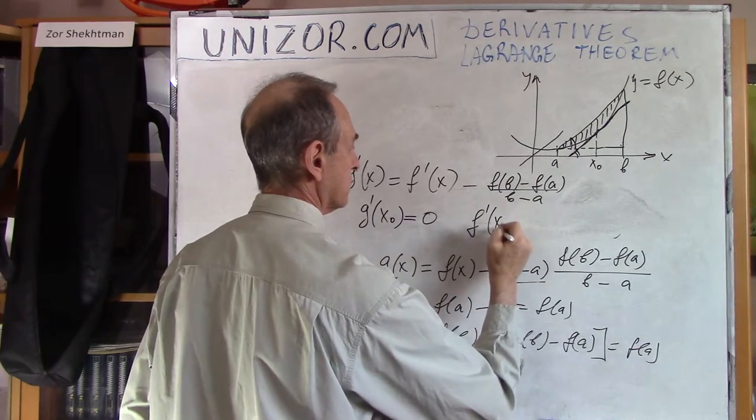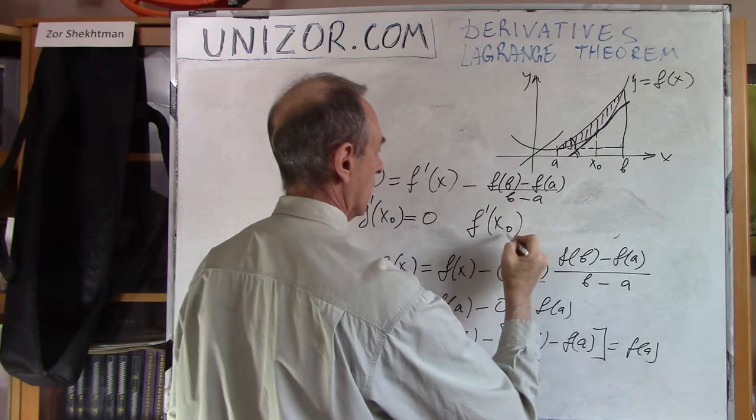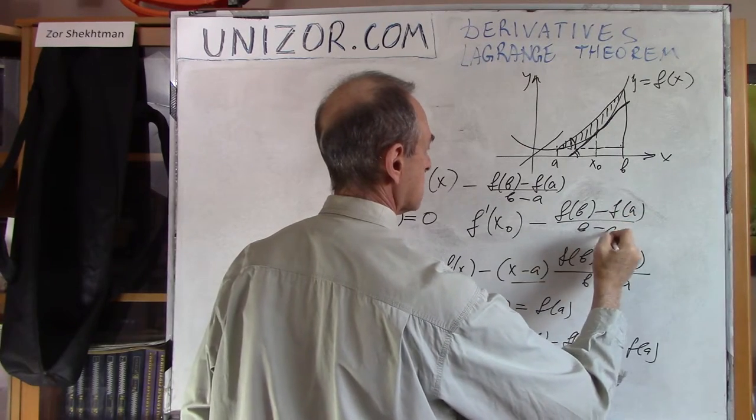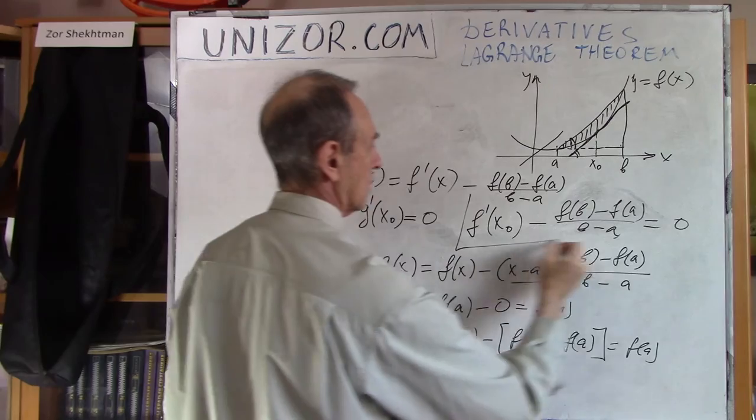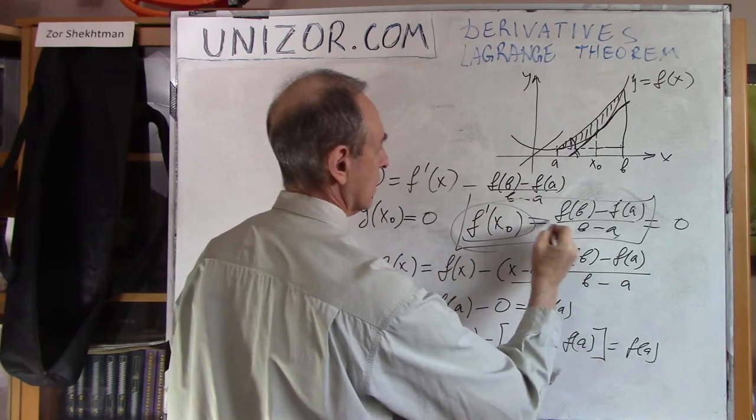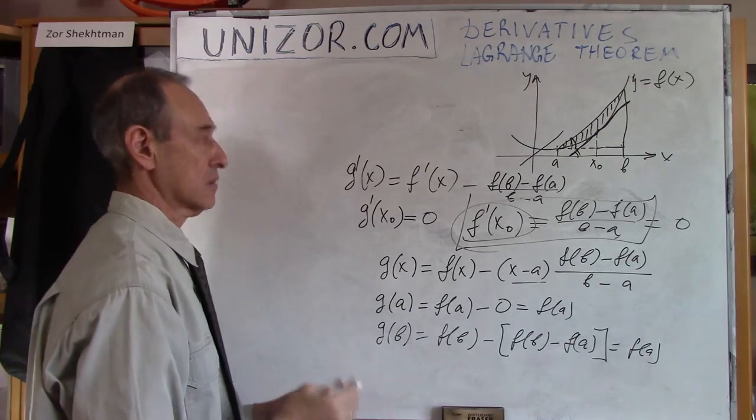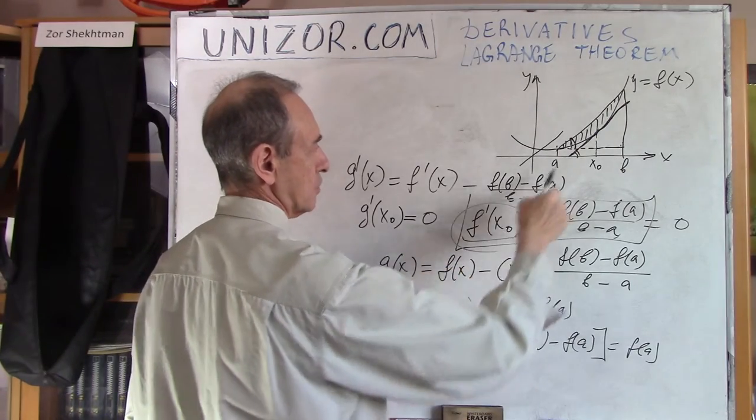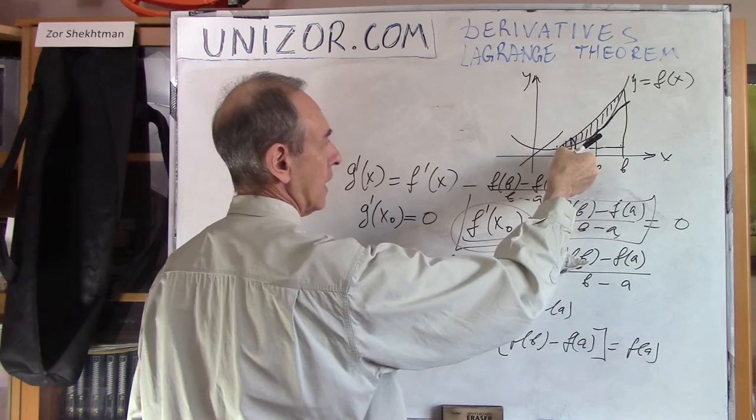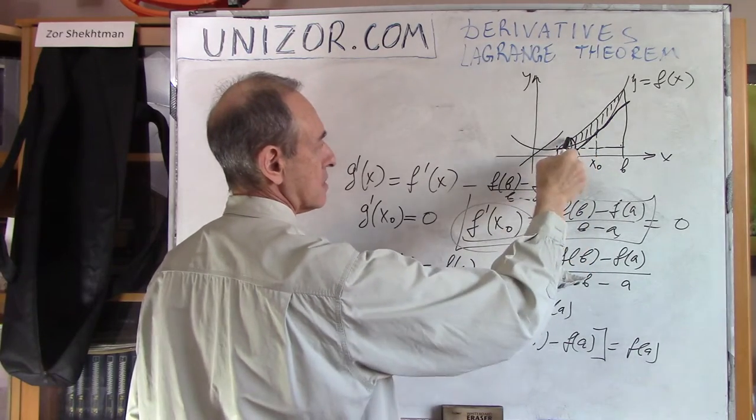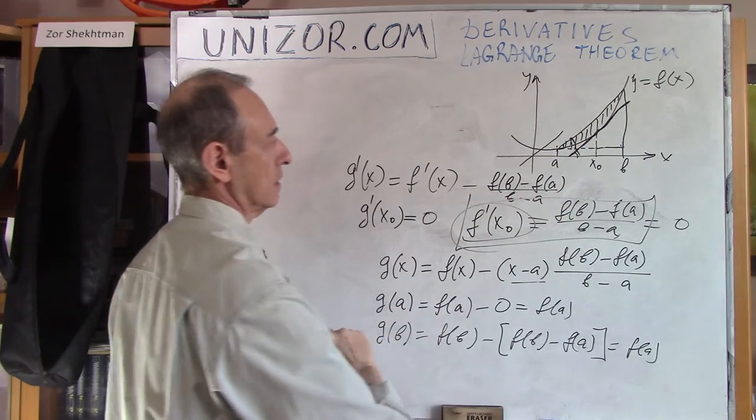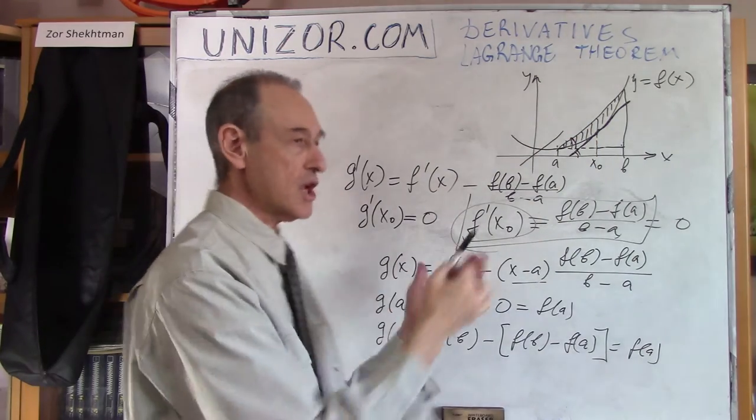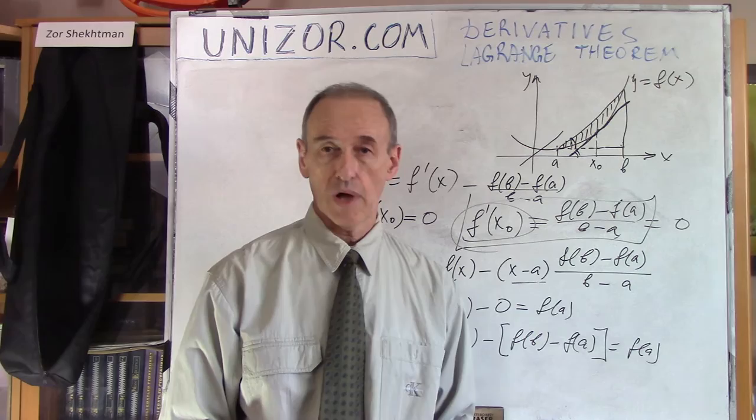That means that F derivative at x0 minus FB minus FA divided by B minus A is equal to 0. So, which means that this derivative is equal to this ratio. And that's exactly what we wanted to prove. Derivative at this point, which is tangent of tangential line, is equal to this, which is tangent of this angle. The tangential line is parallel to a chord, which is geometrically obvious, but it needs some proof, obviously. And that's the proof.